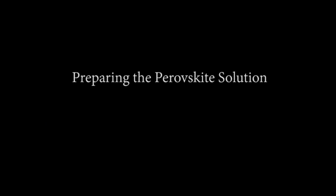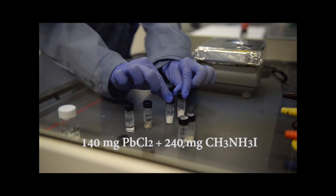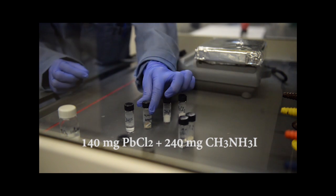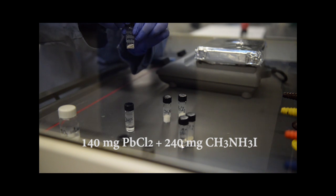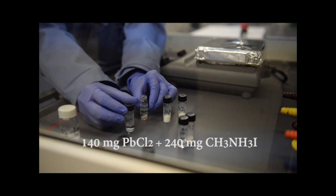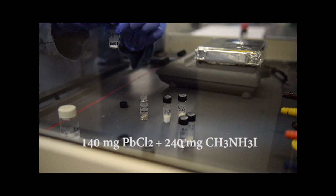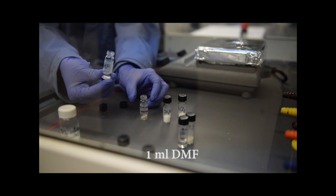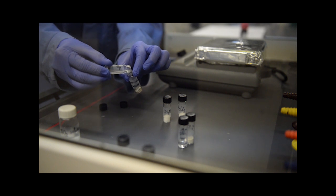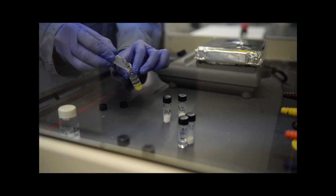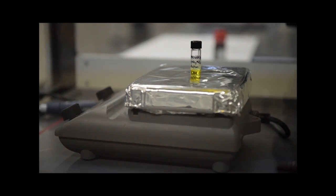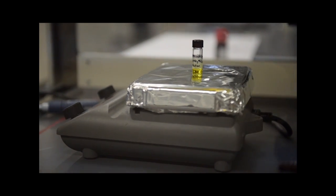The second solution we have to prepare is the light-absorbing material perovskite. To make a 0.5 molar perovskite solution, we will need to mix 140 milligrams of lead chloride and 240 milligrams of methyl ammonium iodide in 1 milliliter of dimethylformamide solvent. The resulting reaction needs to be stirred at 80 degrees celsius until a homogeneous yellow and transparent solution is formed.